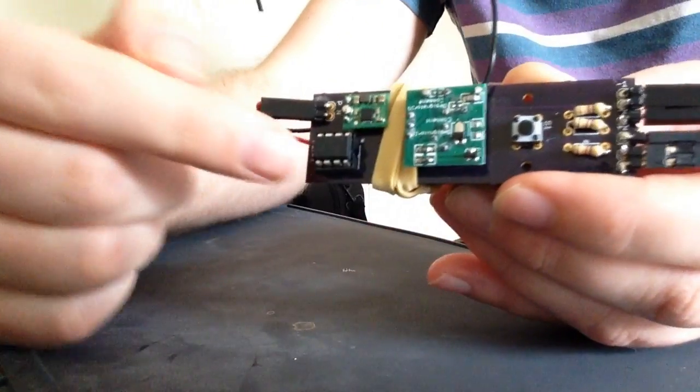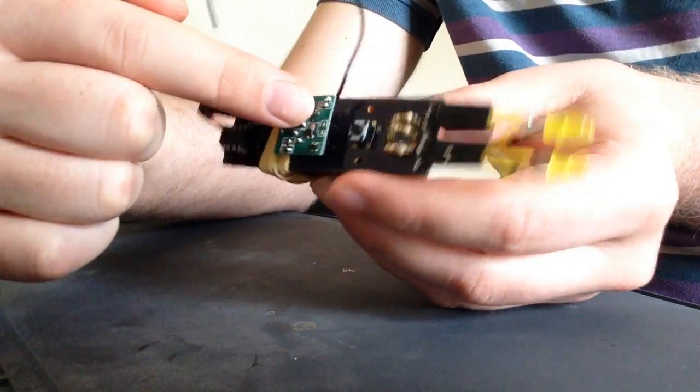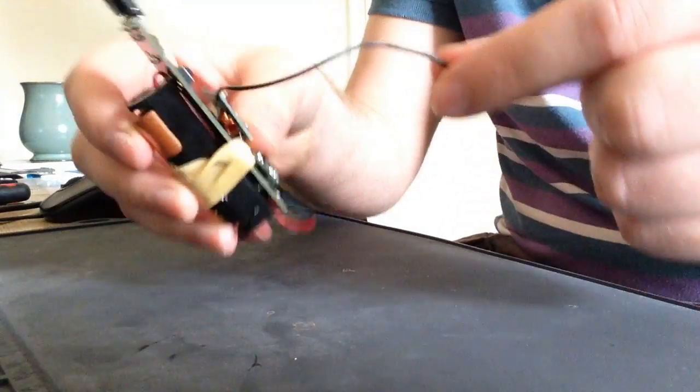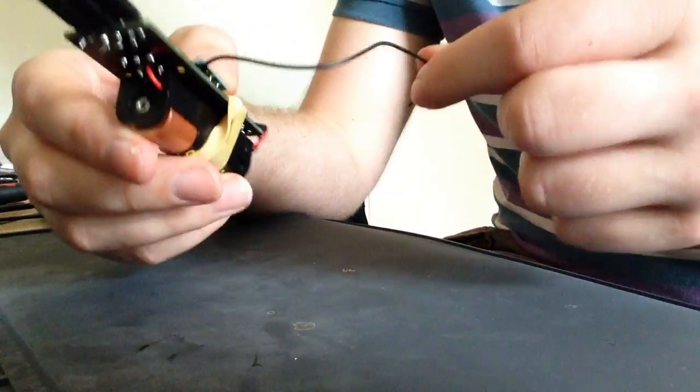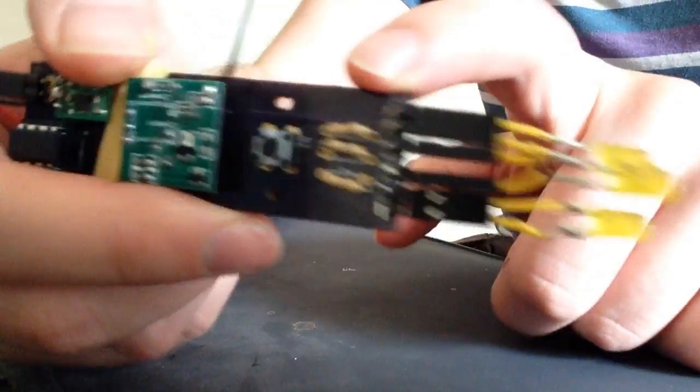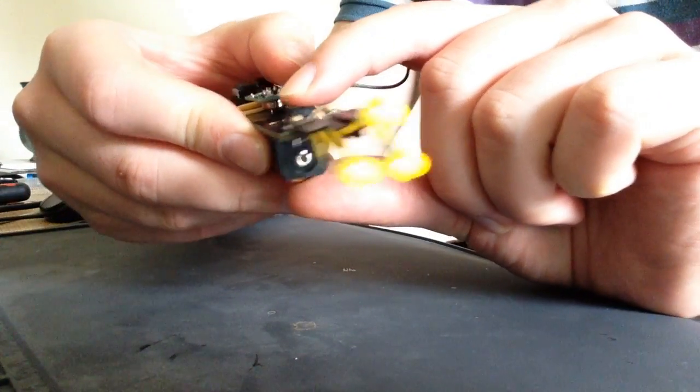On the top we've got our ATtiny 85 microcontroller and the radio module which actually sends the signal to turn the sockets on and off. It's got a little wire antenna you can see here so that signal travels really well. On the top we've got some LEDs and they're protected by resistors you can see here and both the LEDs and the radio are turned on by pressing this button.